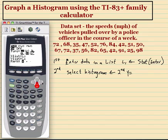I have six graphs here, and the histogram is the one with the rectangles. So I'm going to come over there and select it, and then I have my data in list 1, so I'm going to hit list 1.